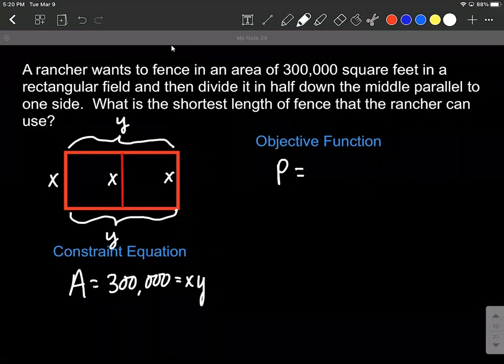So in our case, we have three x's and two y's. And we would like to minimize this perimeter. But to do so, we kind of want to have that all in terms of one variable. So right now we have x's and y's.